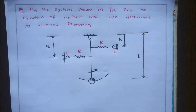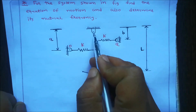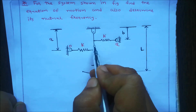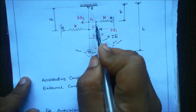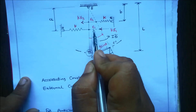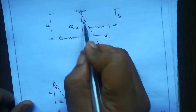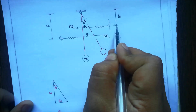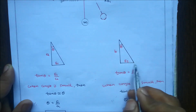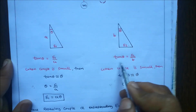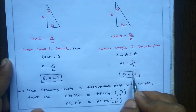In step two, there are two springs with stiffness k. If the pendulum swings through angle theta, one spring is compressed by an amount δ2. Drawing the triangle: angle theta, deflection δ2, and distance b from the support. We know tan θ = δ2/b. When the angle is very small, tan θ ≈ θ, so θ = δ2/b, giving δ2 = b·θ.